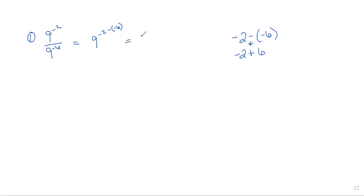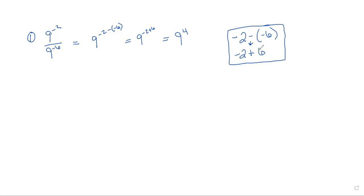So what we're really going to do here is 9 to the negative 2 plus 6 power, which we know is 9 to the fourth power. This is very tricky. If you're not sure and you can't remember how to do this part, just plug this into your calculator — you will be allowed to use one on your tests. So just make sure you do negative 2 minus negative 6, and it will get you that positive 4. That's your answer for number 1.